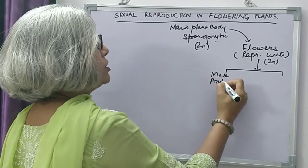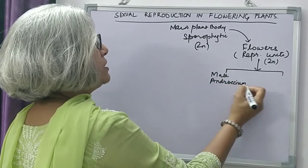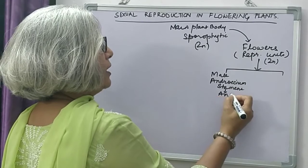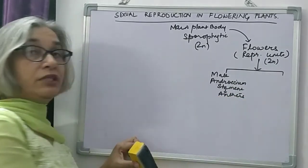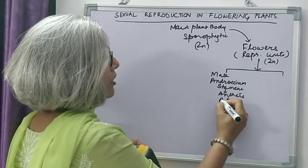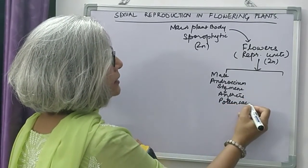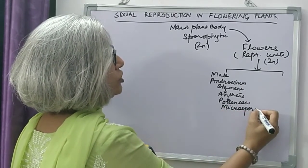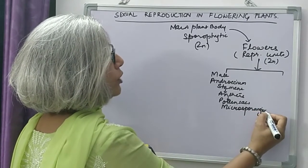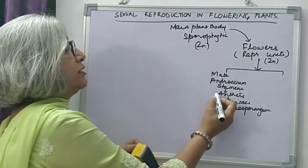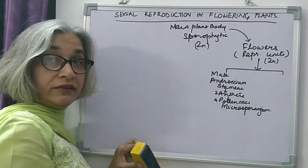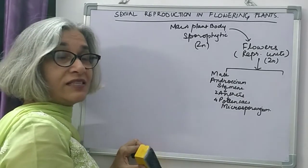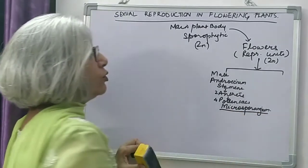The male part is called the androecium, which is made up of stamens. Stamens have anthers. Anthers have pollen sacs. These pollen sacs are also called microsporangia — one is called a microsporangium. Each stamen has two anthers, and each anther has two lobes which are called pollen sacs. Each pollen sac is called a microsporangium.